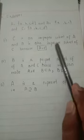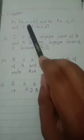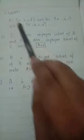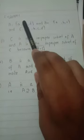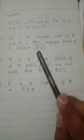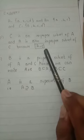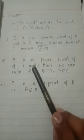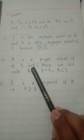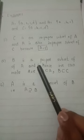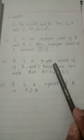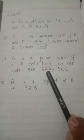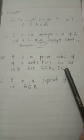C is an improper subset of A because C and A are equal so we can say these are improper subsets of each other. C is improper subset of A and A is improper subset of C because these two sets are equal. Number two, B is a proper subset of A. B is a proper subset of A and C, hence we can write B ⊂ A and B ⊂ C.